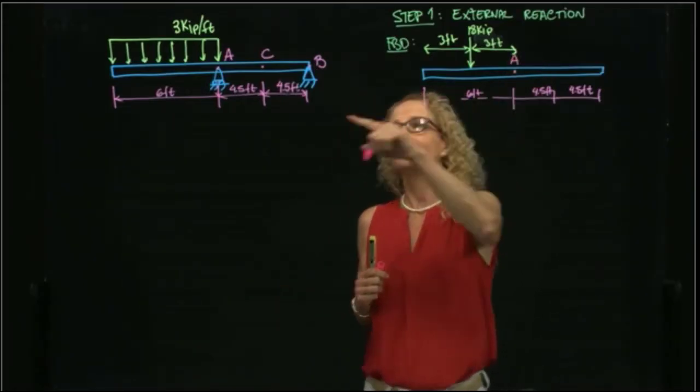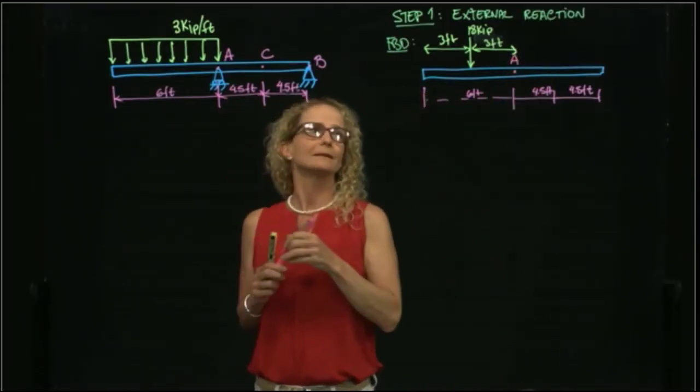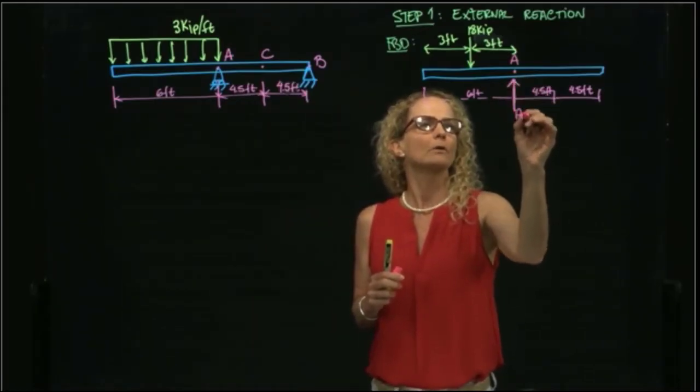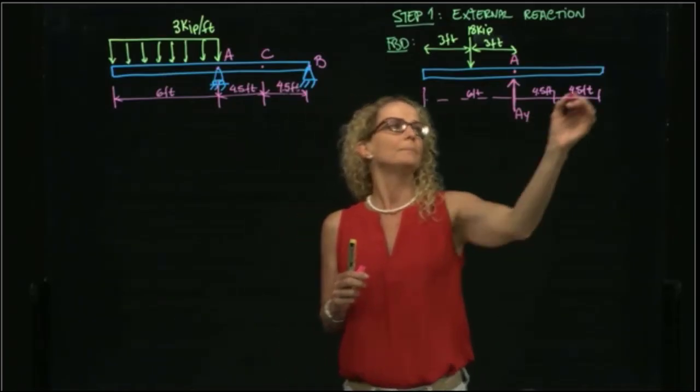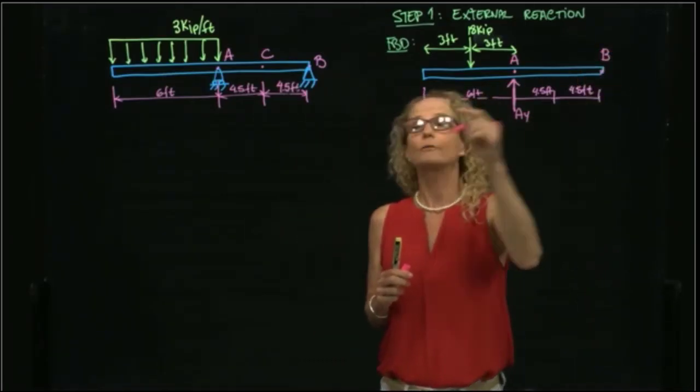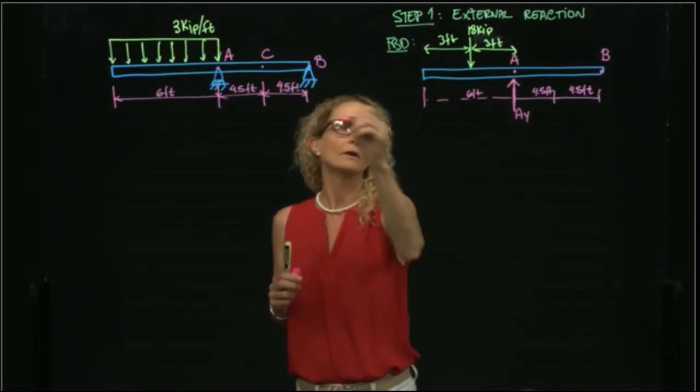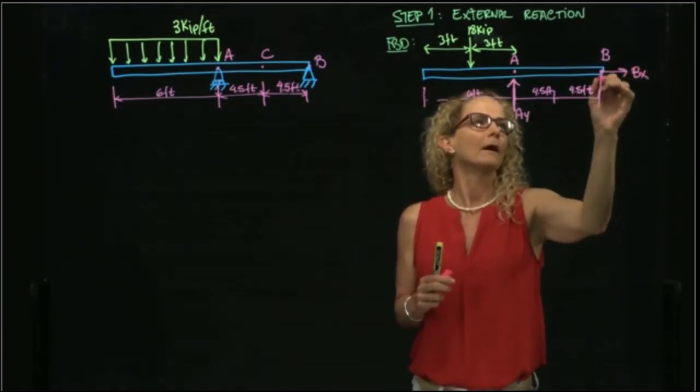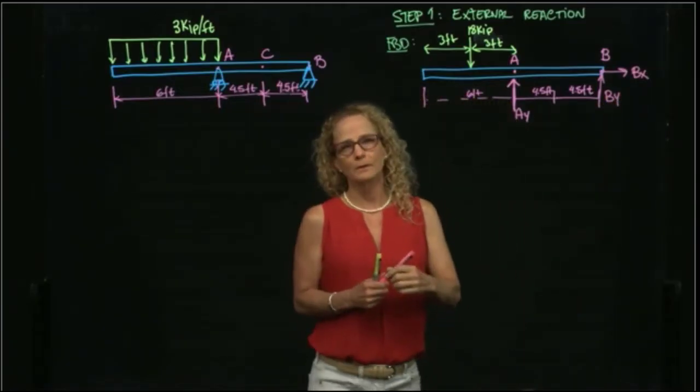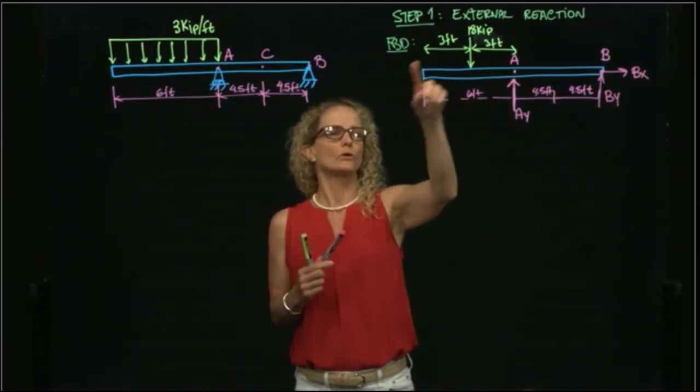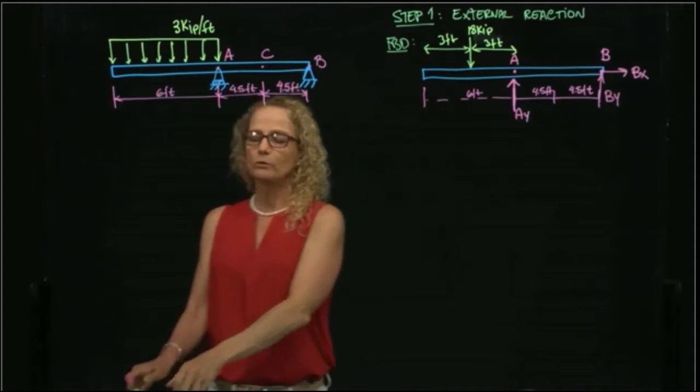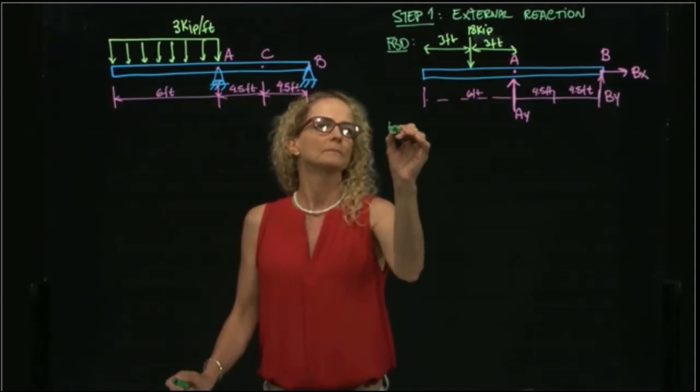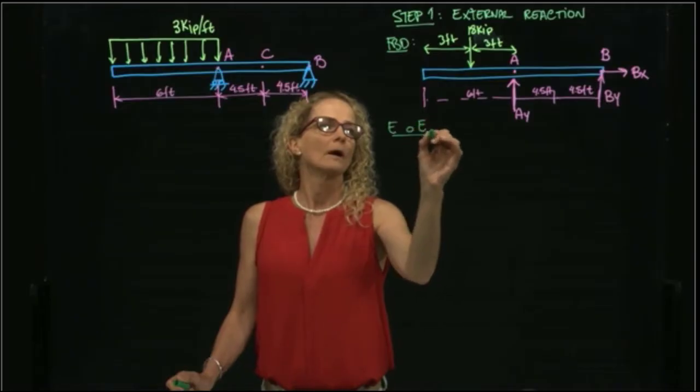What do I have in A? Since it is a roller, I have only one force, which I call AY. And at B, I have two reactions because I have a pin. So I have BX and BY. So this is my free body diagram of the whole structure. Now, I will do the equations of equilibrium.